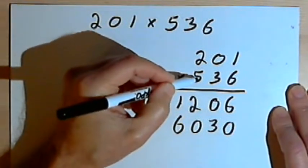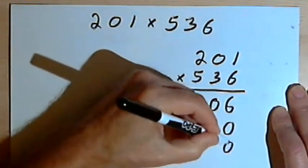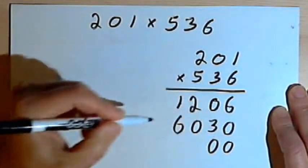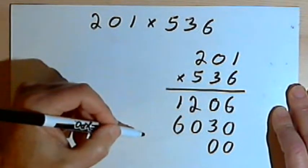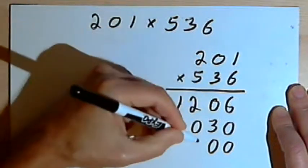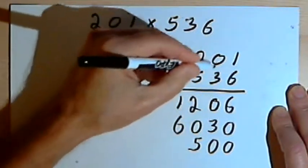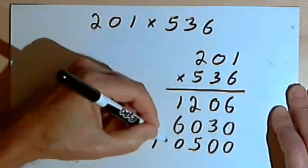Then I've got to multiply by the 5 that's in the hundreds column. So I'll start out by writing two zeros to shift all my numbers over. 5 times 1 is 5, 5 times 0 is 0, and 5 times 2 is 10.